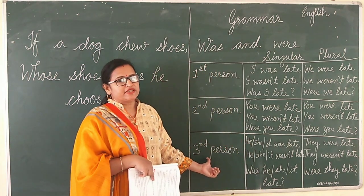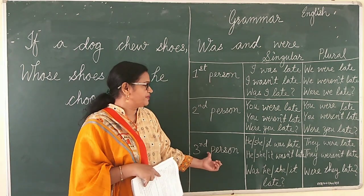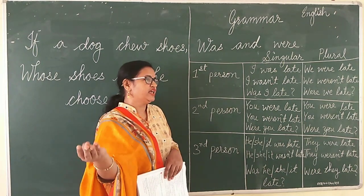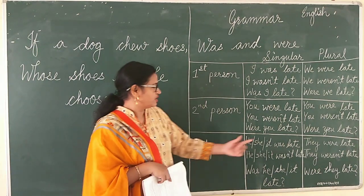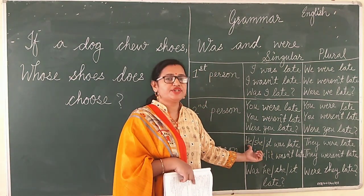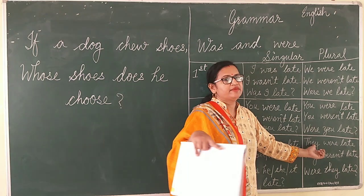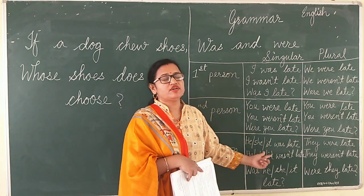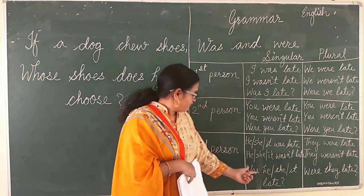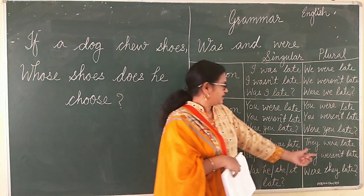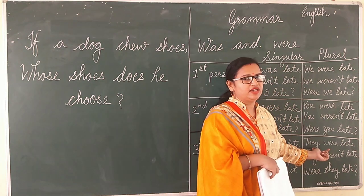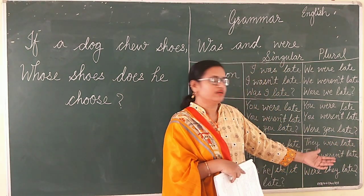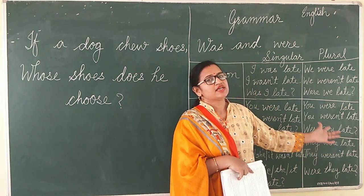Now third person. Third person can be singular or plural. Third person singular is he, she, or it — so: 'He/she/it was late'; 'He/she/it wasn't late'; 'Was he/she/it late?' For third person plural, we use 'they' — 'They were late'; 'They were not late'; 'Were they late?'